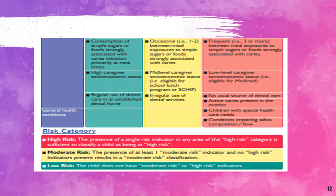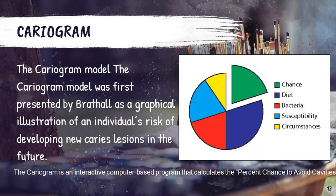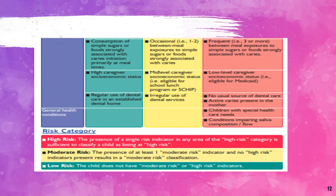Caries lesions in the mother and general health conditions that predispose to caries, or when the child has special health care needs, and also conditions that impair salivary composition and flow are considered. Presence of any one of these high risk factors means the patient is considered high risk. Presence of any one moderate risk indicator and no high risk indicators results in moderate risk classification. Low risk means the child does not have any moderate or high risk indicators.